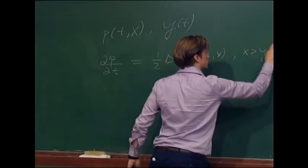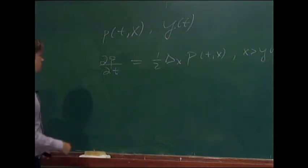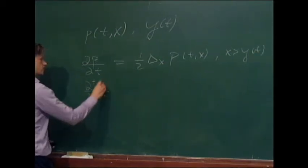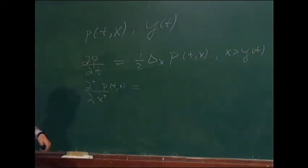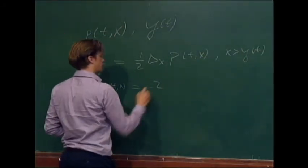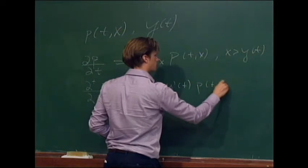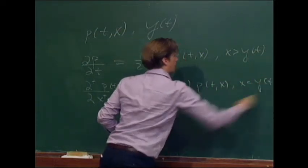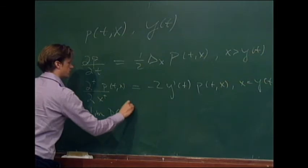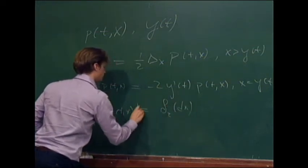When x is greater than y(t), this is just the standard heat equation — the way heat propagates through space. And then we have this one-sided derivative, which basically says that on the side where the heat is located relative to the barrier, we have this relationship. The limit of p(t, x) as time goes to zero is going to be delta_z(dx).